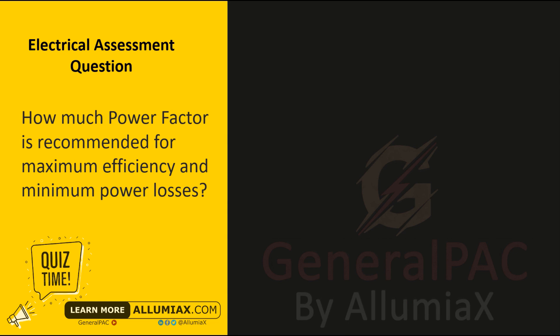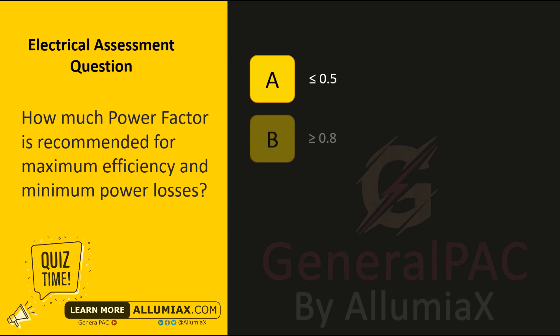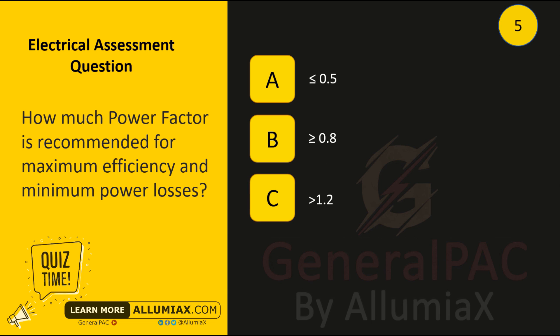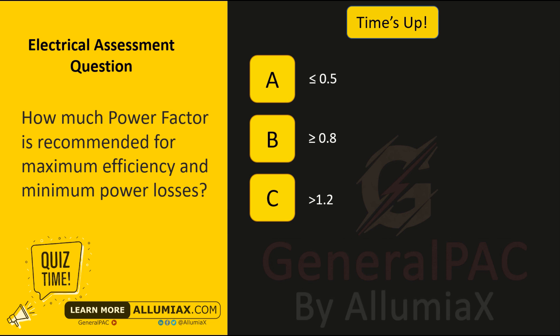How much power factor is recommended for maximum efficiency and minimum power losses? A: Less than or equal to 0.5, B: More than or equal to 0.8, C: More than 1.2. Time's up. The answer is B: More than or equal to 0.8.